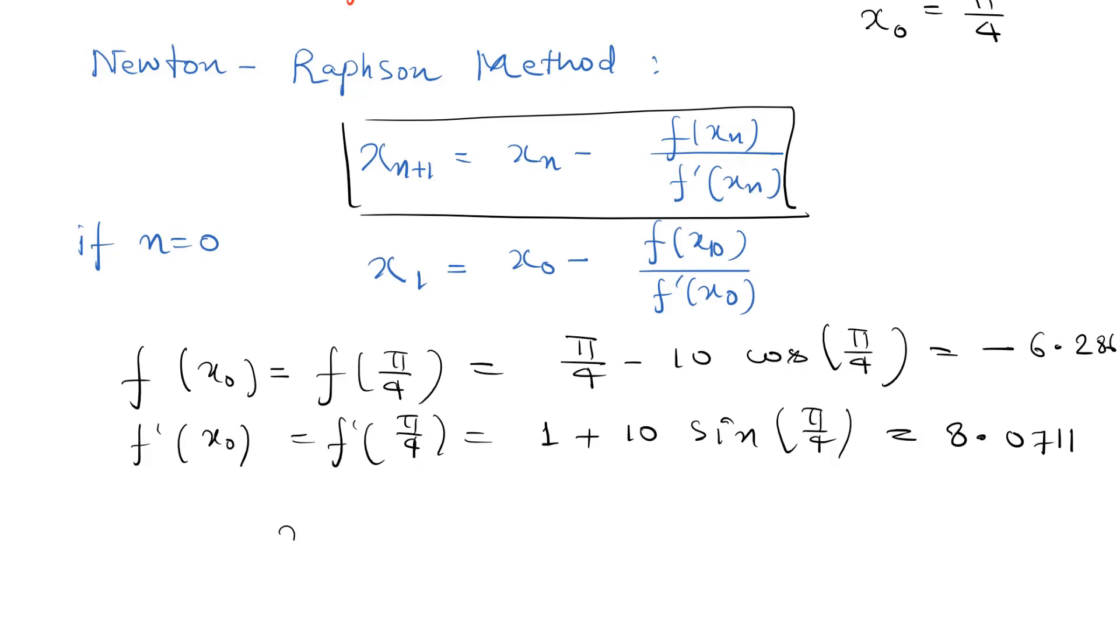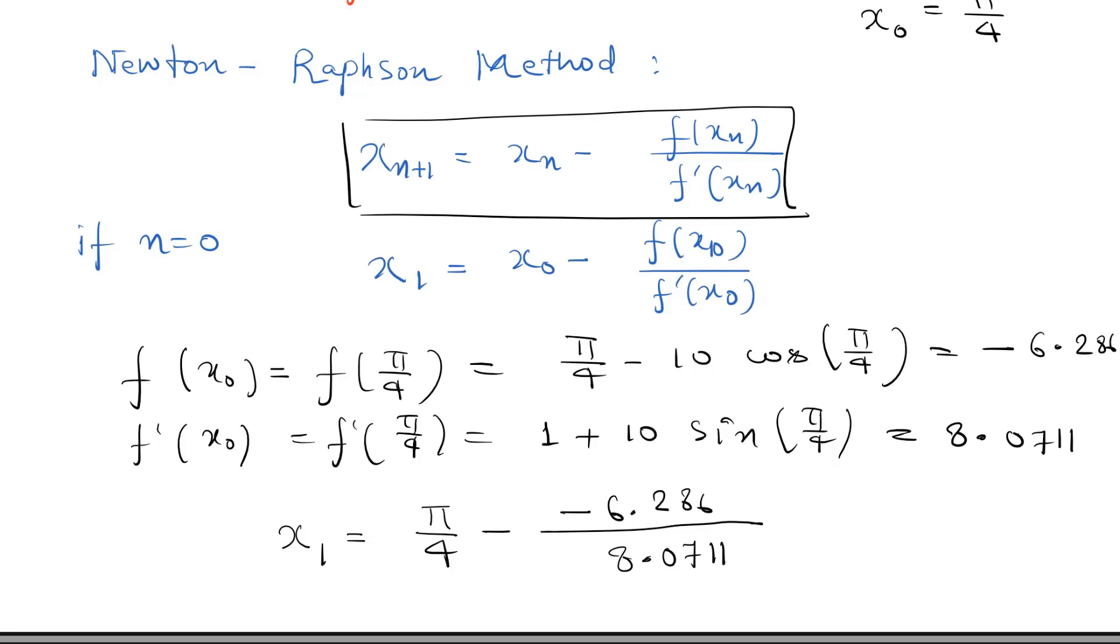So using this, we can find x₁ will be equal to x₀, that is π/4, minus f(x₀) which is negative 6.286 divided by 8.0711. So this value will be equal to 1.56422. Since we need to approximate it to two decimal places, we can write x₁ equals 1.56.